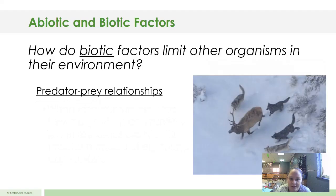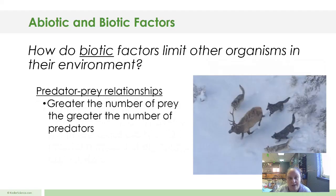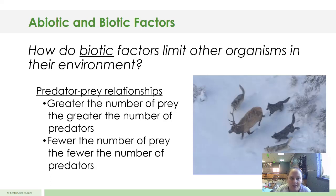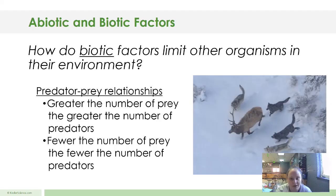Also, predator and prey relationships. The greater the number of prey, the greater the number of predators. The fewer the number of prey, the fewer the number of predators. The reason is, if you have a large amount of prey, you're going to have a large amount of things that hunt that prey. If you have fewer prey, then you're going to have fewer predators, because eventually those predators will move and migrate to other places.